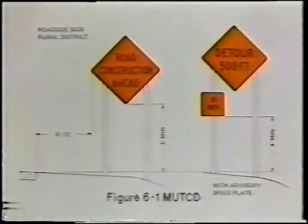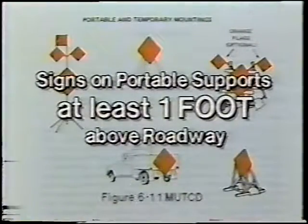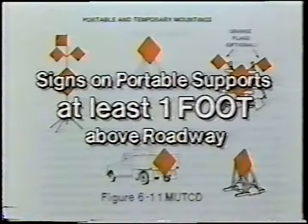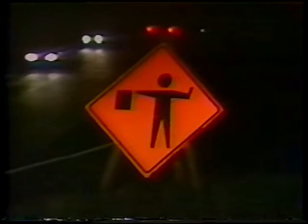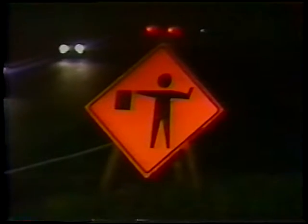Sign installations should be reviewed to avoid any possible glare from vehicle headlights. The minimum height requirements for signs attached to posts are shown. Signs on portable supports are required to be at least one foot above the roadway. All signs used at night are required by the Manual on Uniform Traffic Control Devices to be retro-reflective or externally illuminated. Lighting from existing street lights does not meet this requirement.